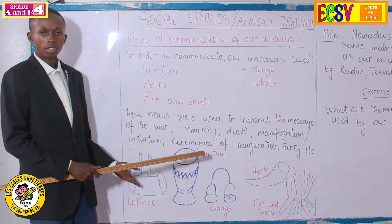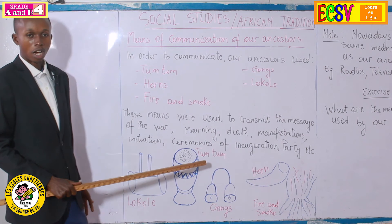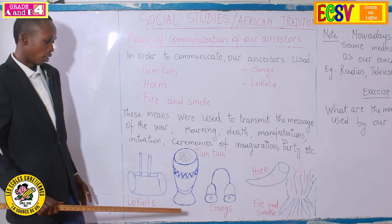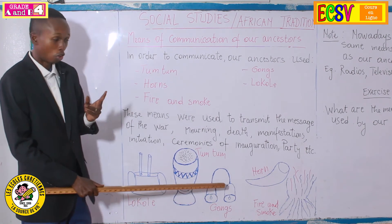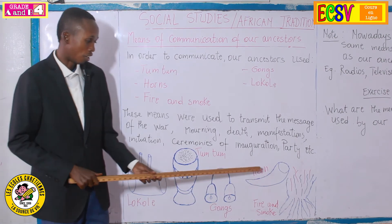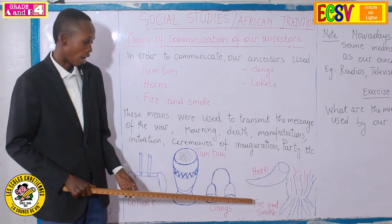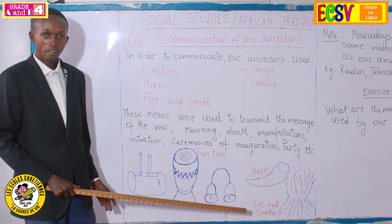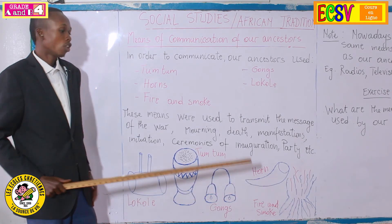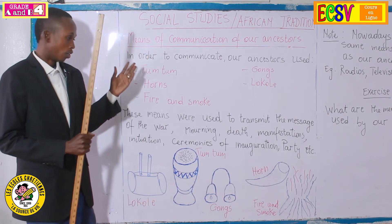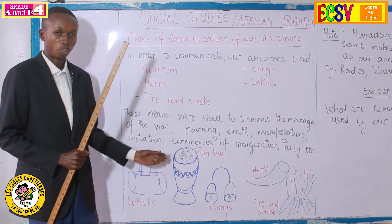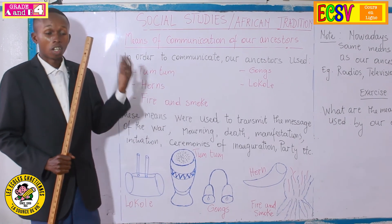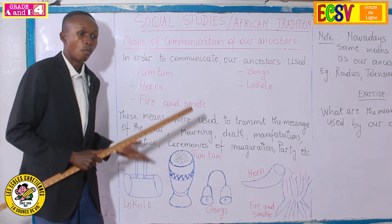Here are the pictures, as you can see. This is the tam-tam. This is locally. These are gangs — okay, because there are two — these are gangs. This is a horn. And these are fire and smoke. I know apart from these ones, there may be other means that our ancestors used in order to communicate, but these are the most used ones.